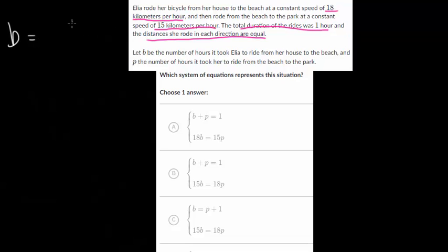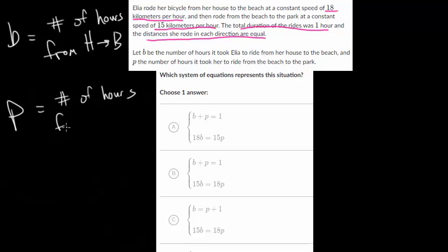So B is the number of hours from H to B, from the house to the beach. And the next letter P is going to be very similar. It's also time, the number of hours from the beach to the park, B to capital P. So we've defined our variables, and now we want to use this key information we're given.